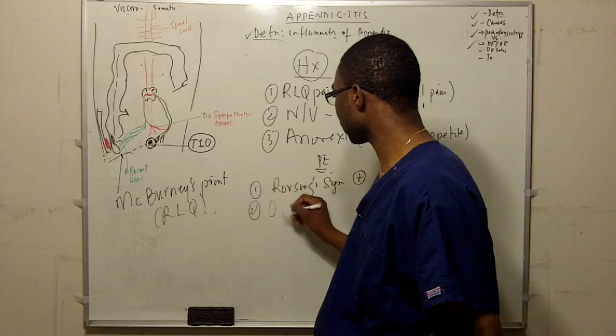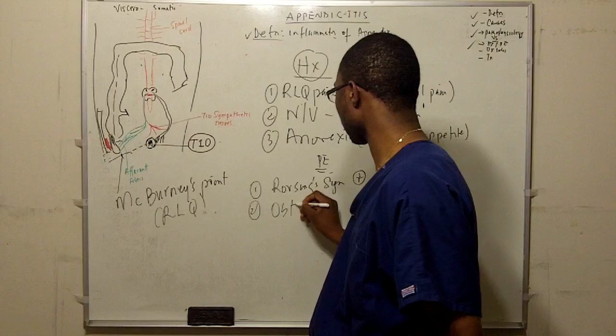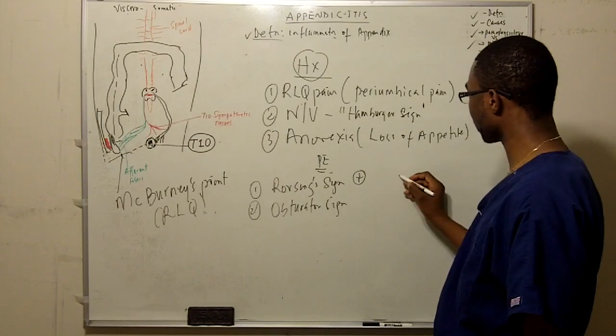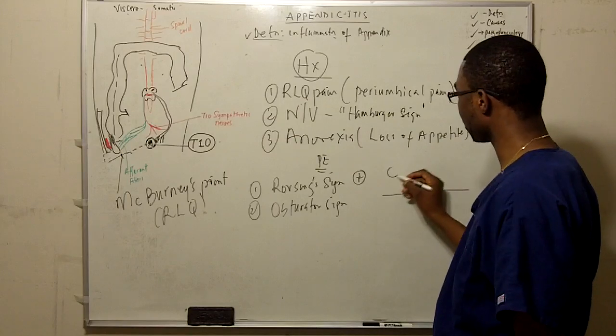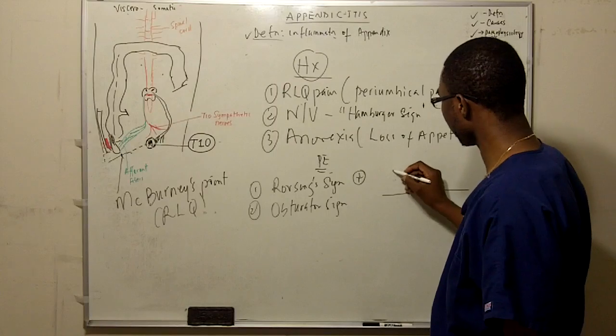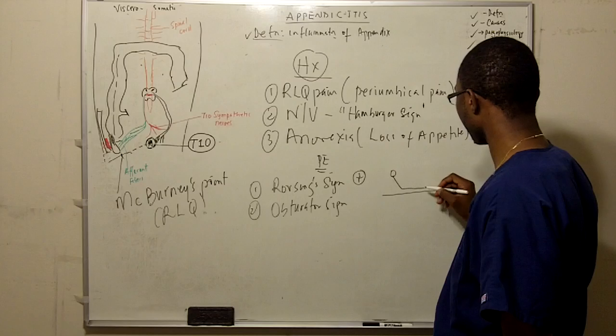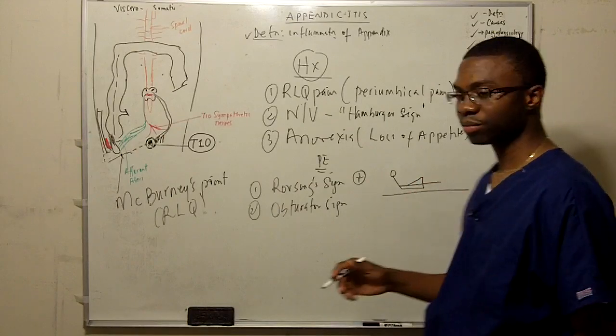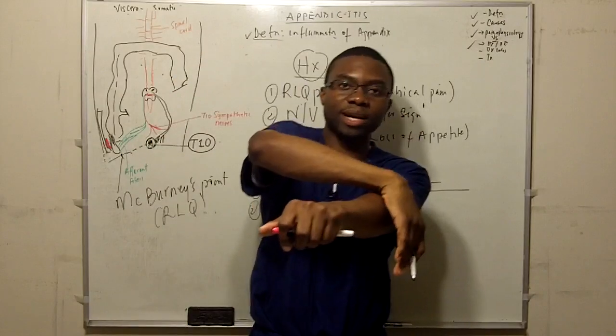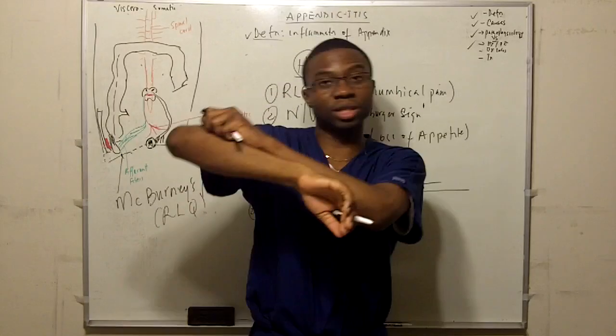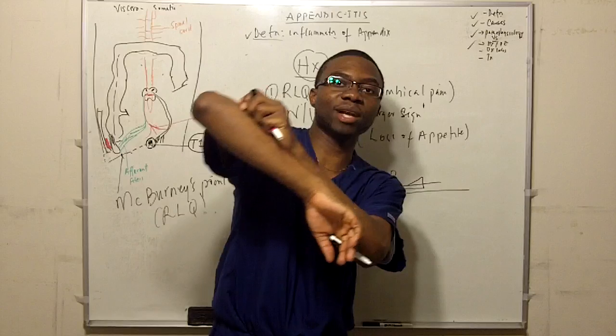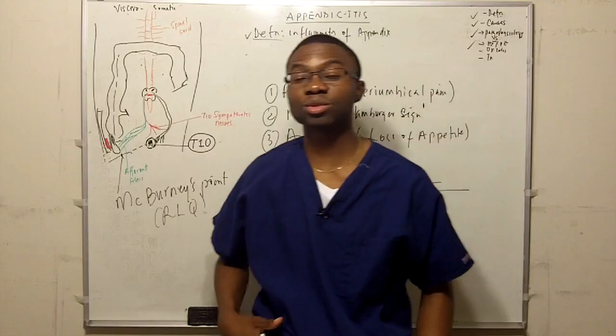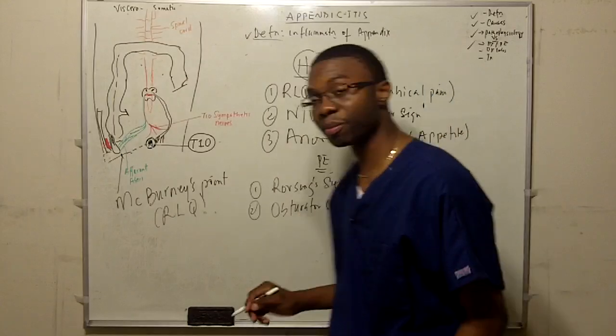Another test is called the obturator sign. In obturator sign, let's have the patient lie on their back. This is the bed and patient is lying on their back. And you take their leg and you cross it to the other side. Basically you take one of their legs and you cross it to this side. And when you cross the leg to this side, you push away. You push away and you turn to push in. You try to adduct. It's going to elicit pain around the psoas because the irritation of the psoas, that's going to hurt like a son of a gun. So that's a positive obturator sign.